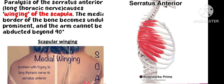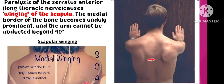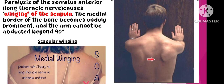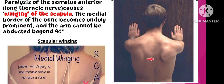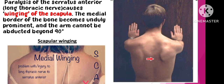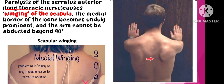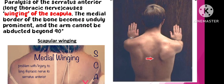The serratus anterior connects the medial border of the scapula to the thorax. When this muscle is paralyzed — due to an injury of the long thoracic nerve — the result is winging of the scapula.